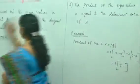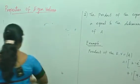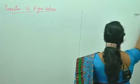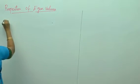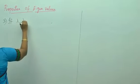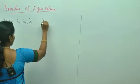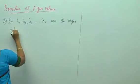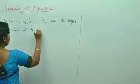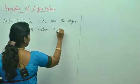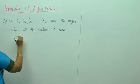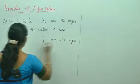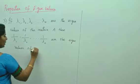This is how you need to find the sum and product of the eigenvalues. Property number 3: if lambda 1, lambda 2, lambda 3, ..., lambda n are the eigenvalues of the matrix A, then 1/lambda 1, 1/lambda 2, ..., 1/lambda n are the eigenvalues of the inverse matrix A inverse.